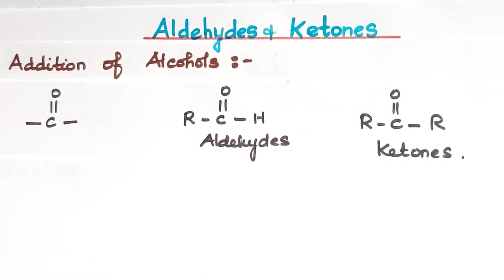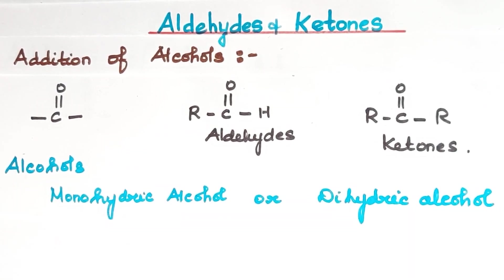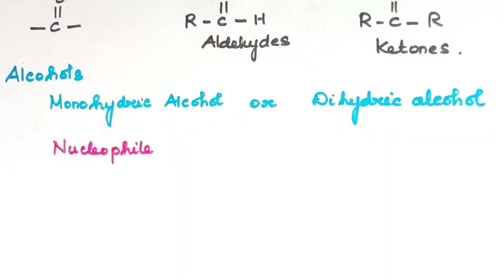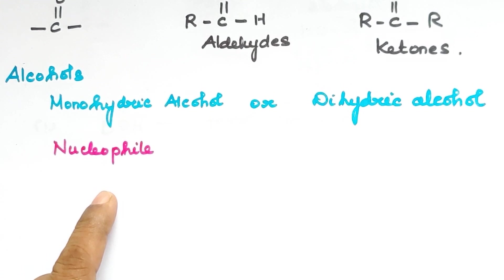Now let's talk about alcohols and ketones — we will discuss how alcohols add. Alcohols can be monohydric or dihydric. Alcohols act as nucleophiles. A nucleophile will attack an electrophile; that is, a nucleophile is electron-rich so that it can donate a pair of electrons to the electrophile.